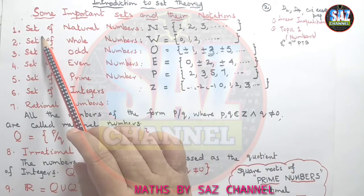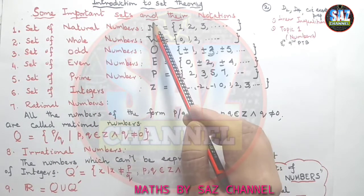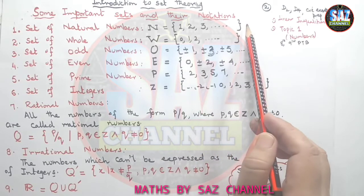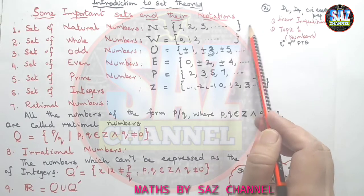The first basic set that we are using from the junior classes is set of the natural numbers. Its symbol is N and its elements are 1, 2, 3 and so on. The dot shows that we cannot count this set, this is the uncountable set.